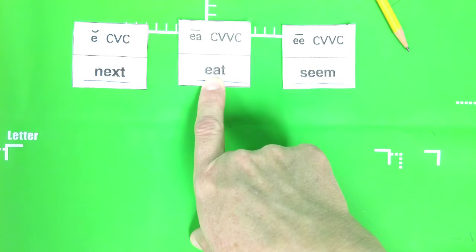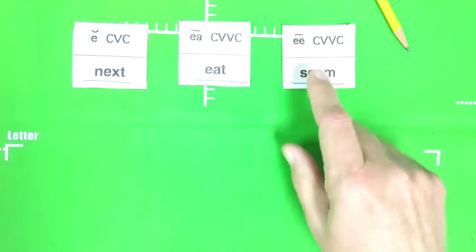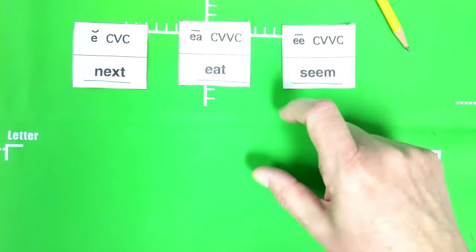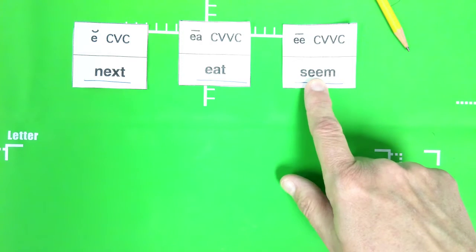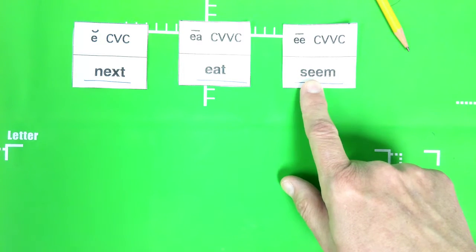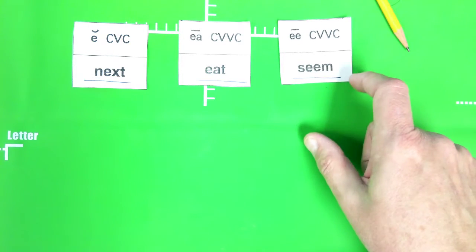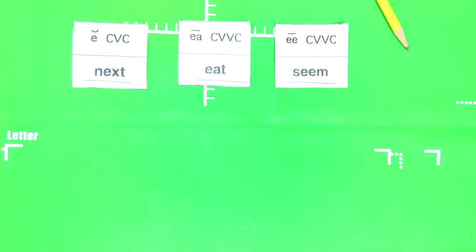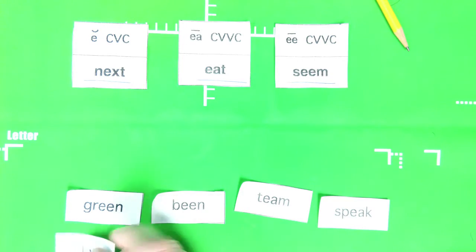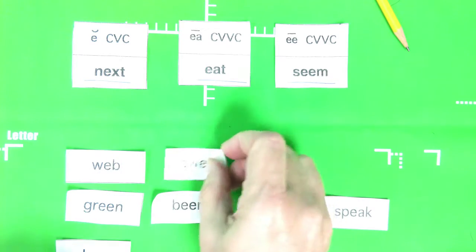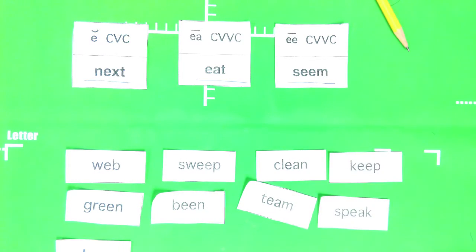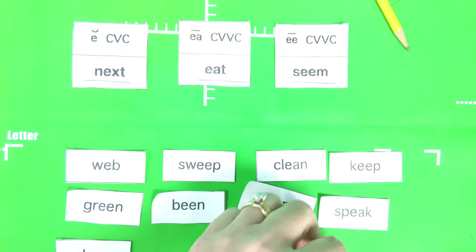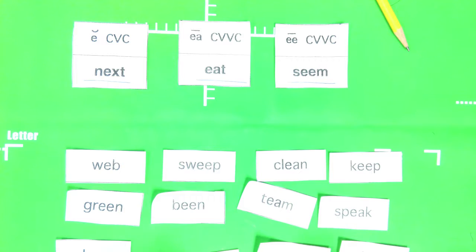And over here we have another consonant vowel consonant word: seem. When two vowels go walking, the first one does the talking and it says its name, E. So E-E says E as the long vowel sound. So that's what you're sorting your words for this week. So I can put out some of my words here. You should have all of these laid out in front of you, so if you haven't done that yet you might want to.